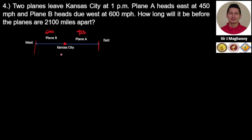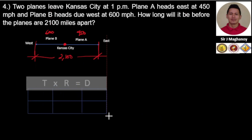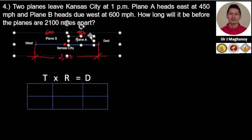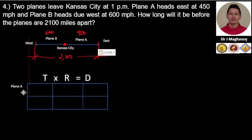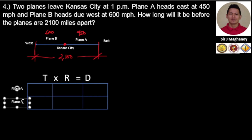Now let's set up our TRD box to gather our data. This box organizes our time, rate, and distance. So we have a row for Plane A and a row for Plane B, and we fill in the data for each plane.